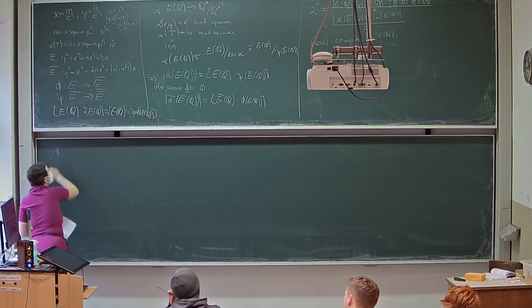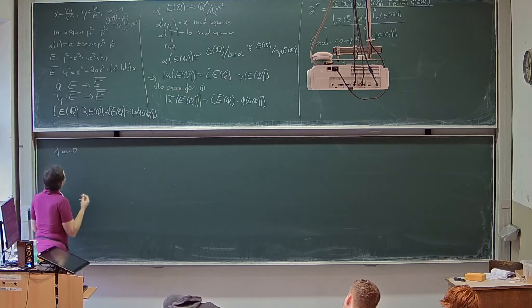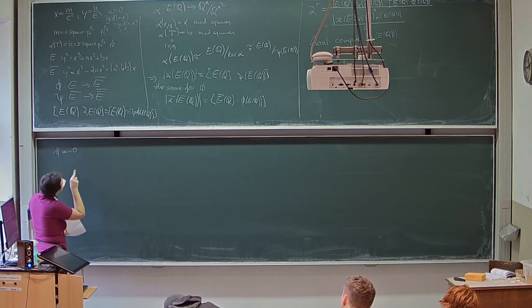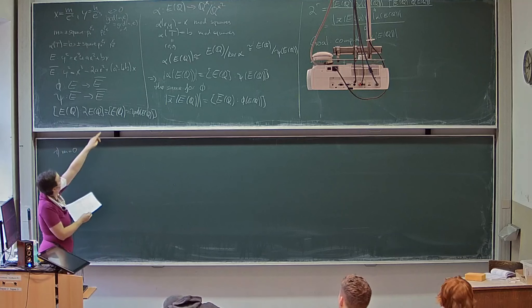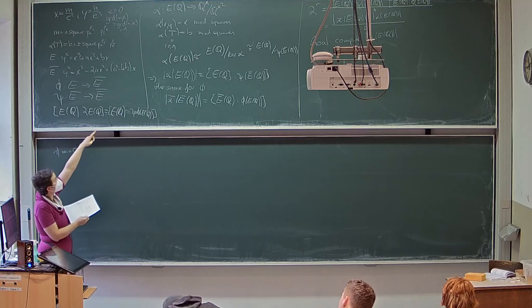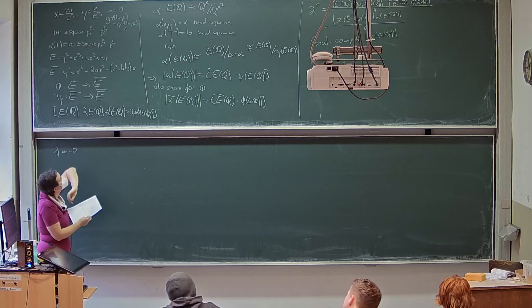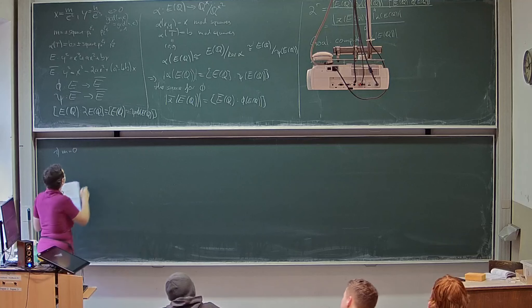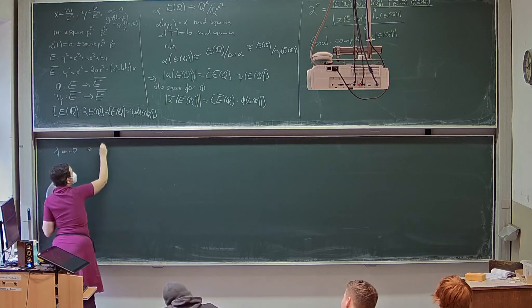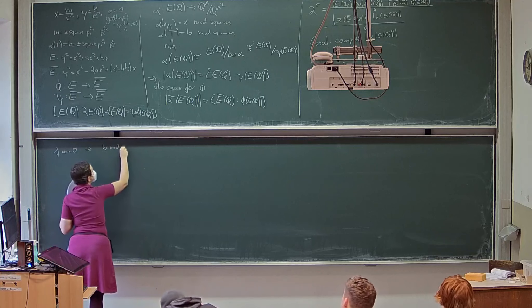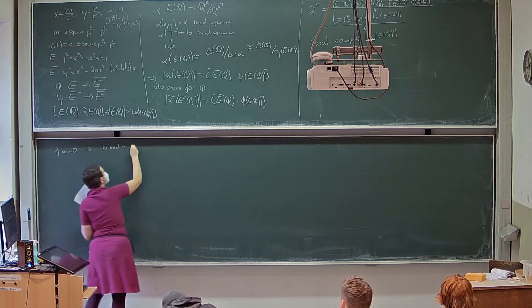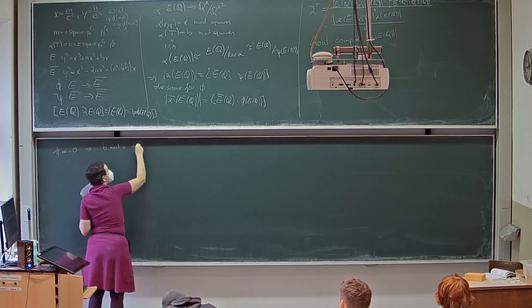So what can happen? m can be 0. When m is 0, we are in the second case: alpha of t is b. So this just leads to b mod squares — this is in the image.